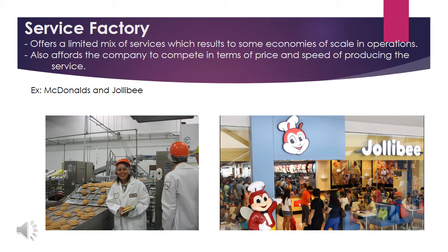We're done with manufacturing type processes. Now let's proceed with service process types, which refer to the provision of services to persons by hand or with machinery. The first is service factory. A service factory offers a limited mix of services, resulting in economies of scale and operation, and allows the company to compete on price and speed. The preferred layout is a rigid pattern of line flow processing. Best examples are the goods and services provided by McDonald's and Jollibee.